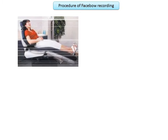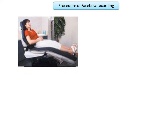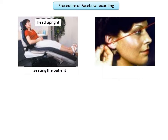The steps in facebow recording: first, seat the patient in a comfortable position with the head upright so that the reference points are easily marked. Next, mark the points for condylar position — the anterior and posterior reference points on the patient's face. Mark a line from the auditory meatus running to the outer canthus of the eye.